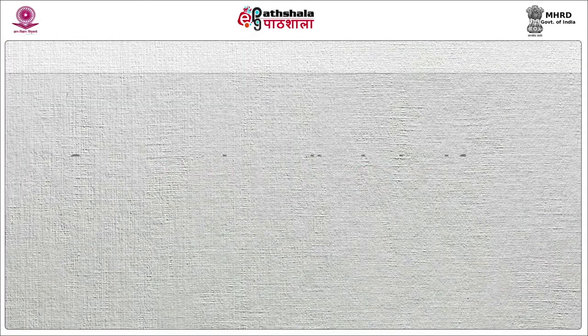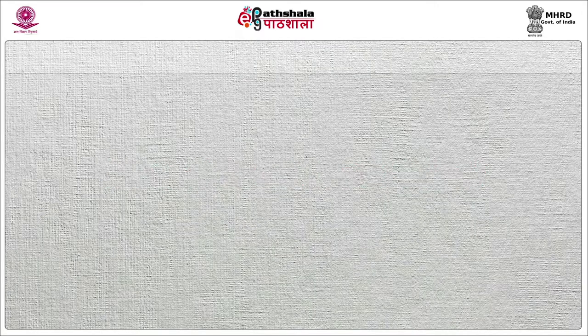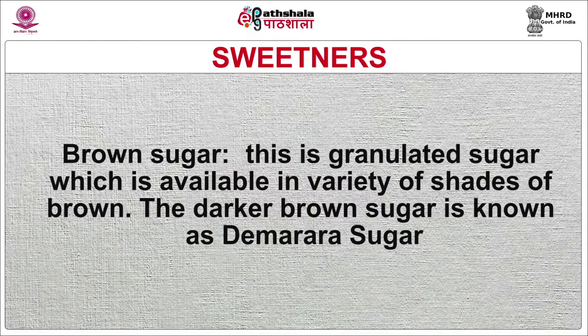Different types of sugar used in baking are as follows. Granulated sugar — sugar crystals usually obtained from sugar cane. This is the regular white sugar, used in whipping eggs, making sugar syrup, and cooking sabayon over a double boiler. Castor or breakfast sugar is commonly used in breakfast for tea and coffee. It consists of small, even-grained sugar crystals. Icing sugar — granulated sugar crushed into fine powder with a small percentage of corn starch added to keep it smooth and free flowing. It is used as icing for cakes and pastries and can also be sifted on top of dry baked sweet products as a garnish. Brown sugar is granulated sugar available in a variety of shades of brown; the darker brown sugar is known as demerara sugar.